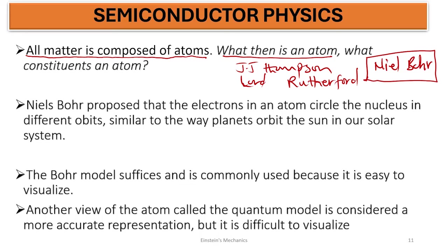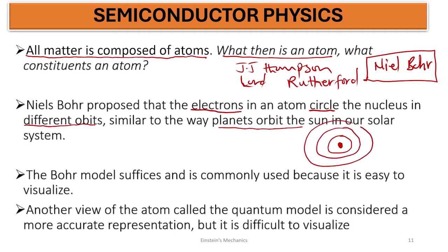According to Bohr, he proposed that inside the atom there are electrons which circle around the nucleus in different orbits, similar to the way planets orbit the sun. Bohr is saying that the atom — the basic component of matter — when you look at it, there is a nucleus and there are shells around it, with electrons revolving around the nucleus at various shells.